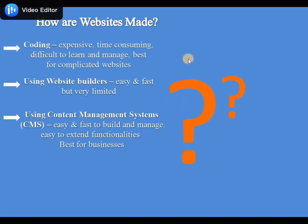How are websites made? We have a lot of ways you can build a website. We have coding, using website builders, and using a content management system. When we talk about coding, it involves writing the whole code — there are lots of languages: HTML, JavaScript, PHP, Python, C Sharp. The good thing about coding is that you are limitless — you could build any website. The other two ways are somewhat limited to building specific types of websites compared to writing raw code.